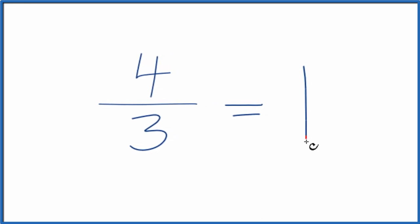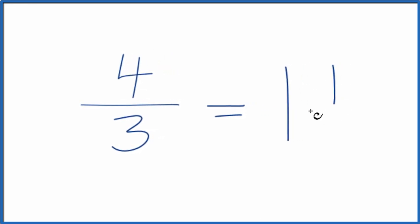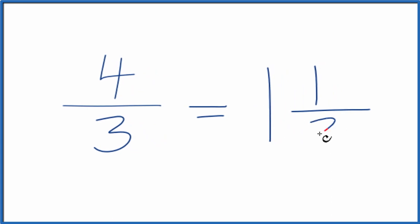So 3 goes into 4 one time with 1 left over. And then we just bring the denominator across. So 1 and 1 third, that's the mixed number for the improper fraction 4 thirds.